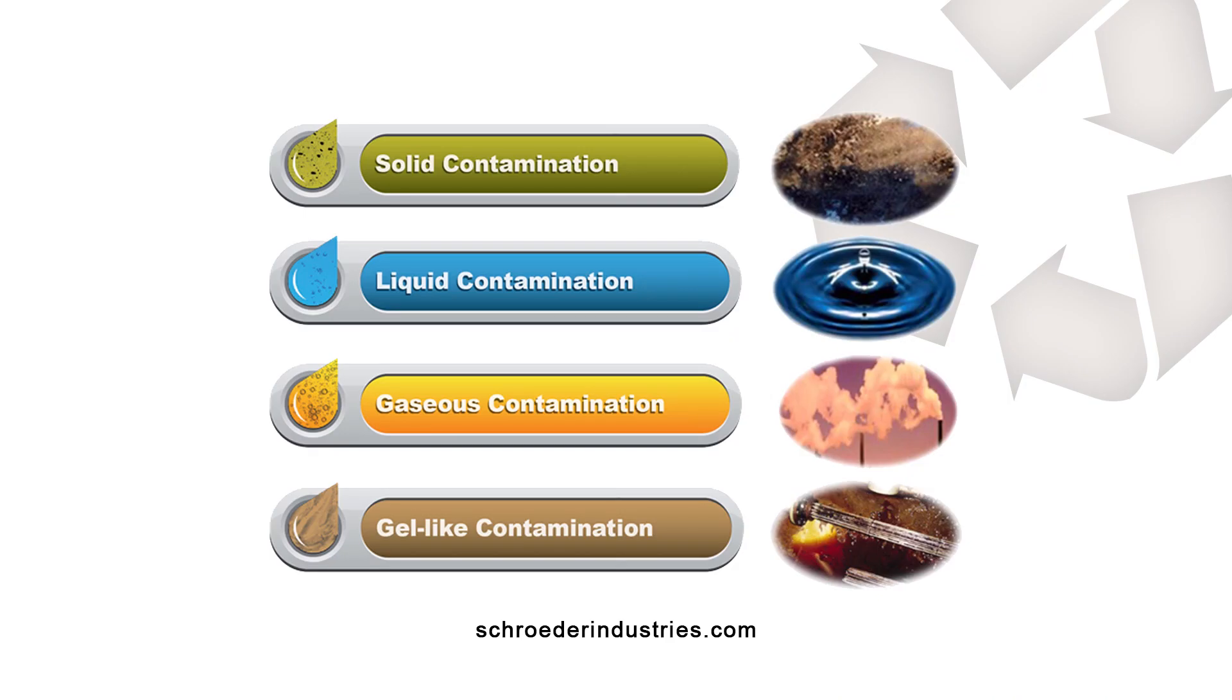The main four types of hydraulic and lubrication fluid contaminants are solid particle contamination, liquid or water contamination, gaseous or air contamination, and gel-like contamination, which is most often associated with oil degradation products, otherwise generically known as varnish.